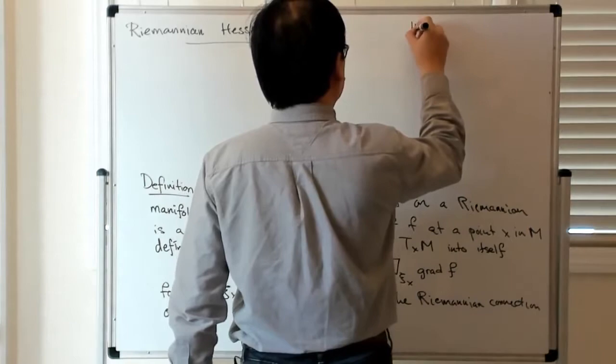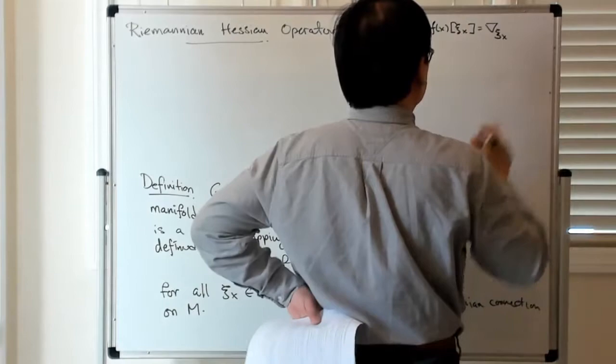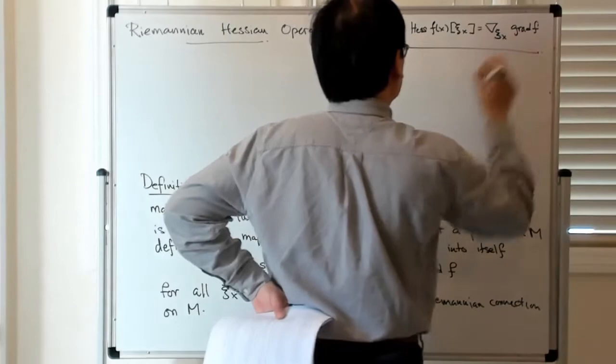So let me just state that as a remark and let me maybe just write this here, that Hessian of f of x acting in a particular direction is equal to the covariant derivative in this direction acting on the gradient of f.